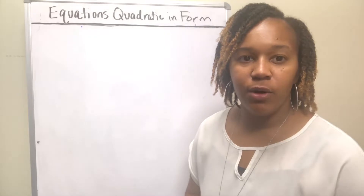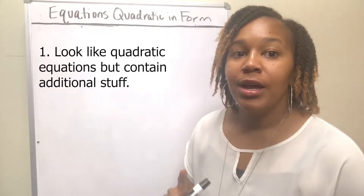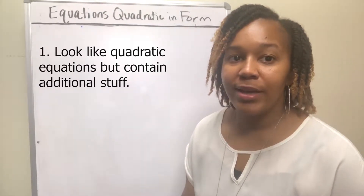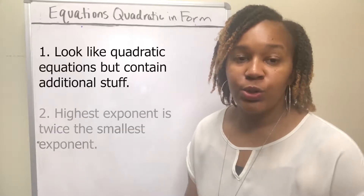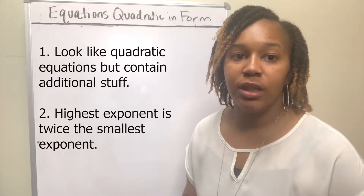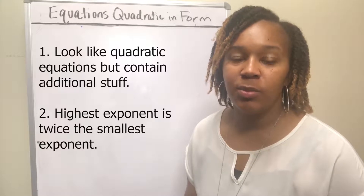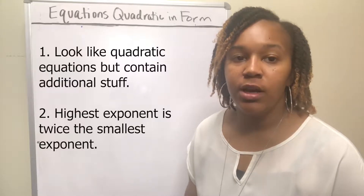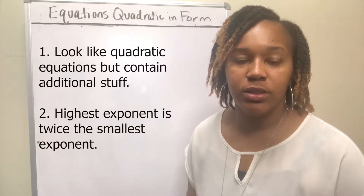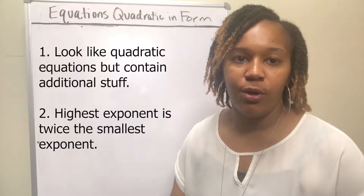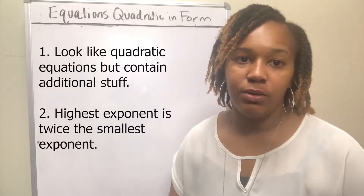Equations that are quadratic in form are equations that either look like a quadratic but have some additional stuff, or two, it is an equation that has the highest exponent that's twice the smallest exponent. So if you have one of those two equations, you have an equation that's quadratic in form. And so we're going to look at some examples on how to solve those.